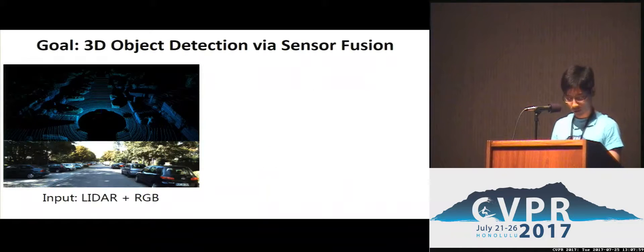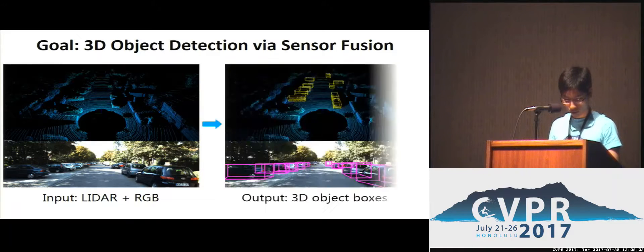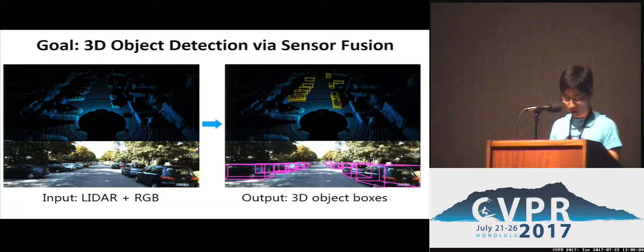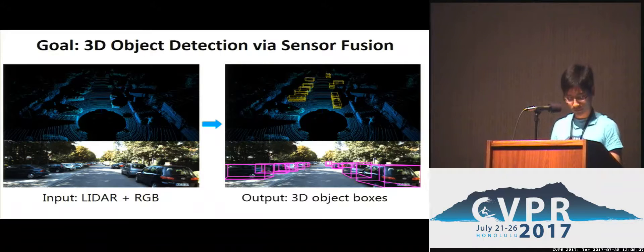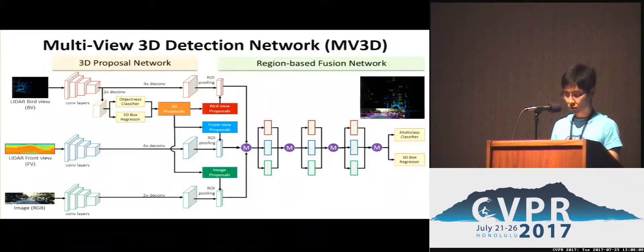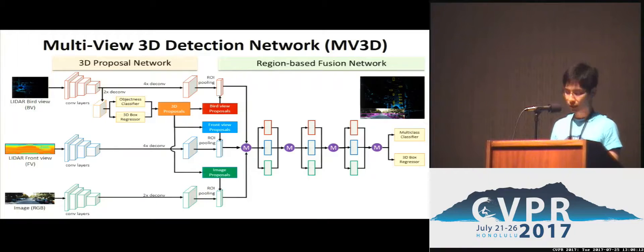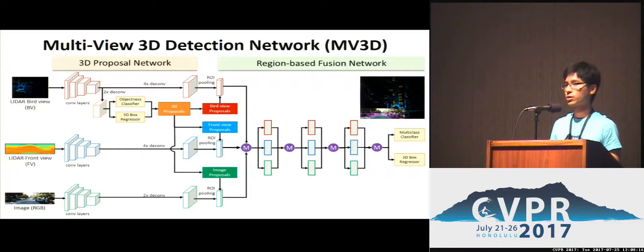So our goal is: given a LiDAR point cloud and RGB image as input, our model predicts accurate 3D bounding boxes of objects in the scene. To achieve this, we propose an end-to-end Multi-Views 3D Object Detection Network, which is composed of a 3D proposal network and a region-based fusion network.